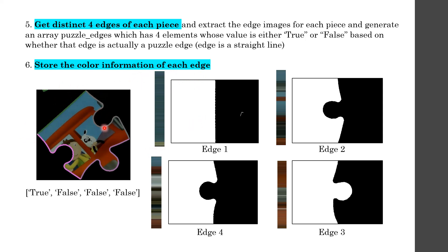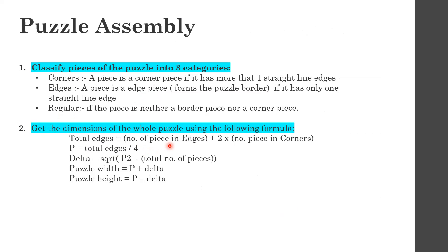I also store the color information of each edge into a color vector, which will be used later when connecting the pieces. The next stage — puzzle assembly — is the most important stage, where the expected output is knowing which piece connects to which piece.